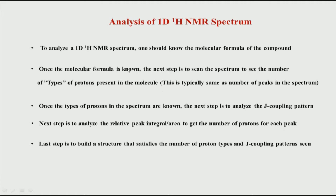We will continue now with the analysis of 1D NMR spectrum. In the last class we saw the different steps required for analyzing and interpreting an NMR spectrum. We basically need to know the molecular formula, the types of protons, the J coupling pattern, and the relative intensity or peak area. Taking all of these together, we can get the total structure of the molecule. If we know the molecular formula, the number of hydrogens should match the final predicted structure.